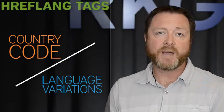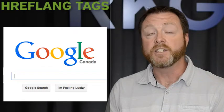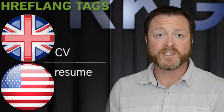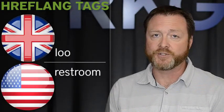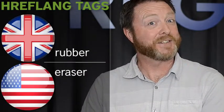Technically these pages should not be duplicates of each other. They should have the different variations of the language in them so that the user feels like they are actually getting the correct language when they search from their search engine, from their country, utilizing their language. While languages and dialects are very similar — such as the difference between American English and British English — there are subtle differences such as CV versus resume, flat versus apartment, loo versus restroom, rubber versus eraser, or bangers and mash versus sausage and potatoes.